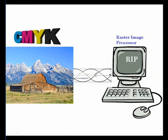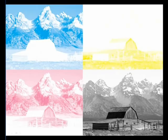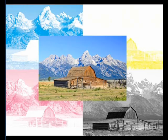The CMYK image or artwork is then sent to a raster image processor, or RIP, which separates the artwork into the four process colors. CMYK is also referred to as process printing, or process colors. A plate is created for each separation. When the four colors are overprinted, they recreate a full color reproduction of our artwork.